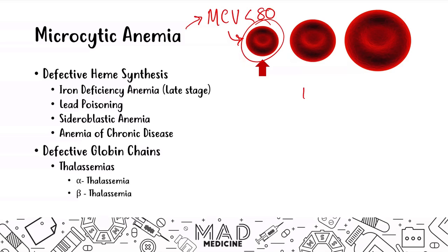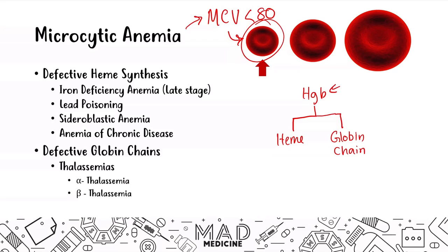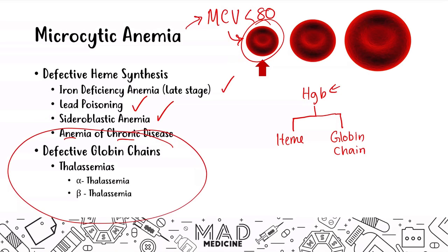Essentially, you have hemoglobin, which is composed of either heme or globin chains. If at any point any portion of this gets messed up, you're going to have defective hemoglobin, and that can lead to microcytic anemia. We've already discussed the defective heme synthesis issues like iron deficiency, lead poisoning, and sideroblastic anemia in previous videos. Today we are going to be focusing on defective globin chains.